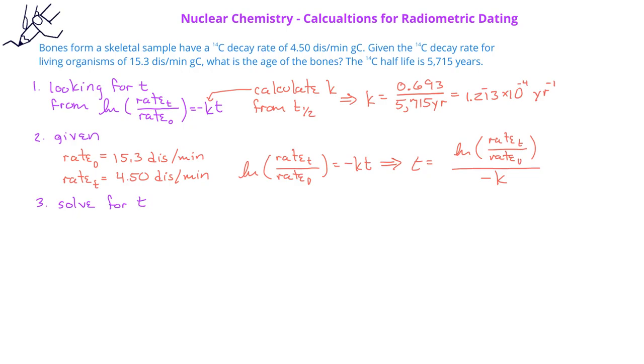When we plug in the values and do the calculations on a calculator, we find that the bones have an age of about 1.0 times 10 to the fourth years, or about 10,000 years old.